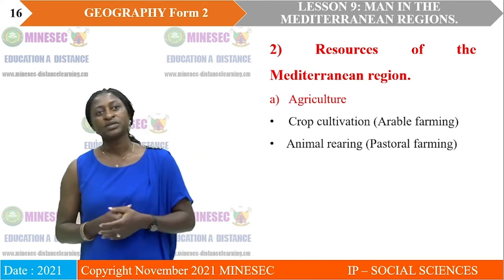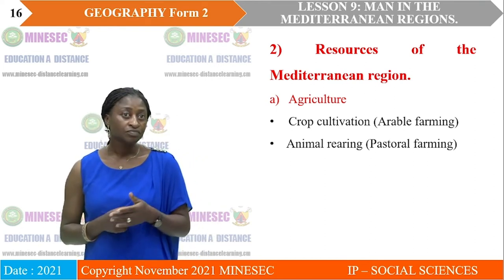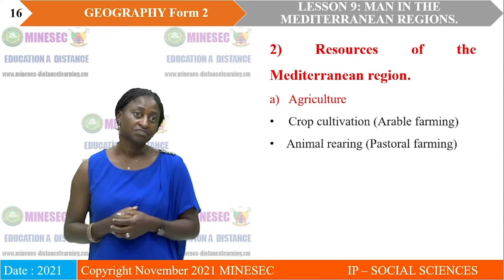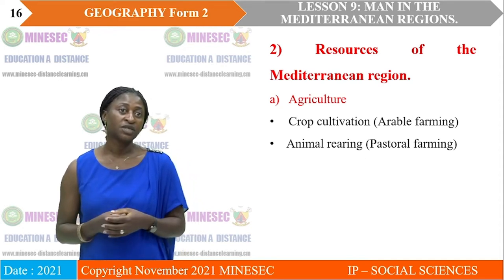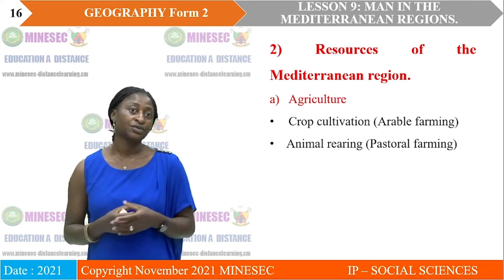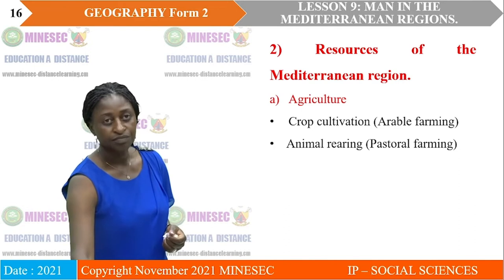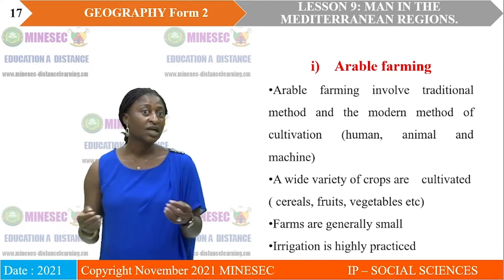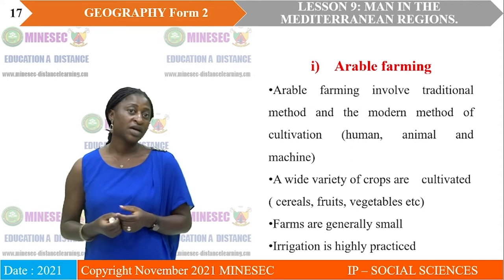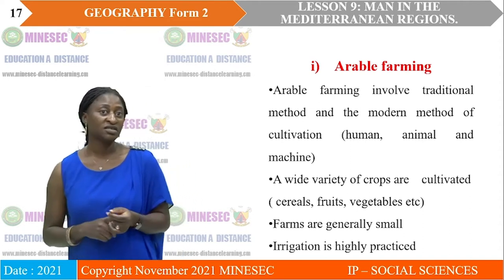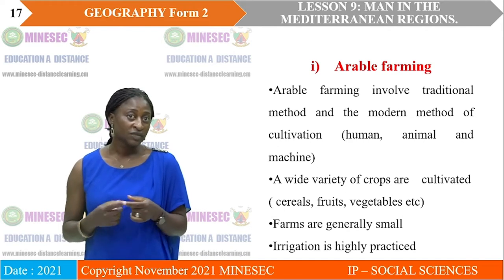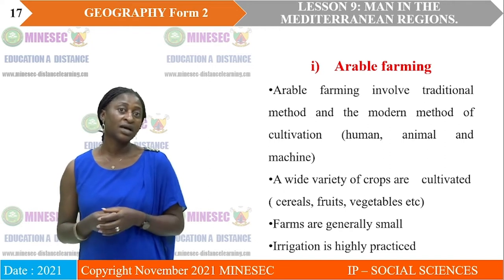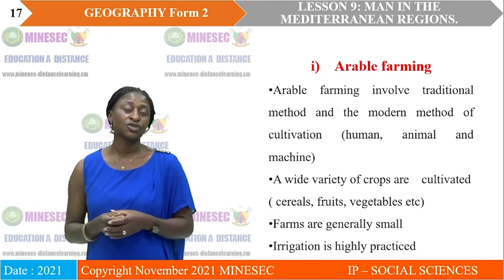Let's look at the resources of the Mediterranean region. The activities and different resources include agriculture — the cultivation of crops, arable farming, and animal rearing or pastoral nomadism. Arable farming consists of the traditional and the modern method of cultivation, whereby human labour is very intensive. We have animals which are also being used to till the soil, and we also have machines — that is mechanical agriculture, the modern method of agricultural practices.